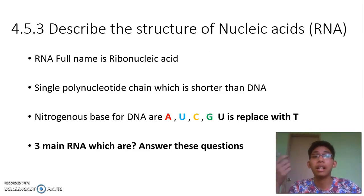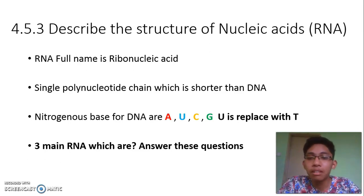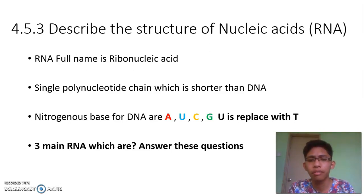DNA has a double helix with two strands. The nitrogenous bases for RNA are A, U, C, G — T is replaced with U. In RNA, thymine (T) is replaced by uracil (U).